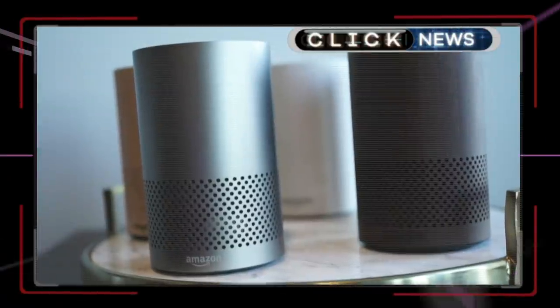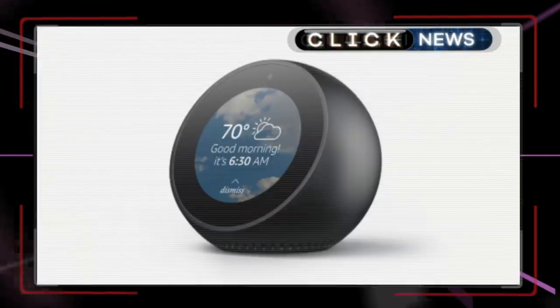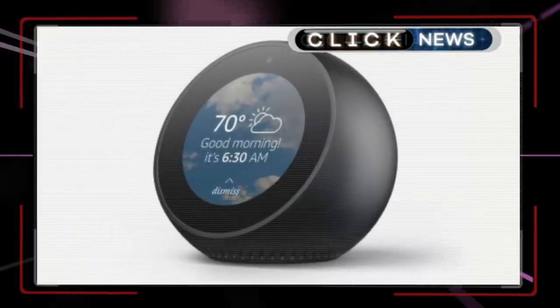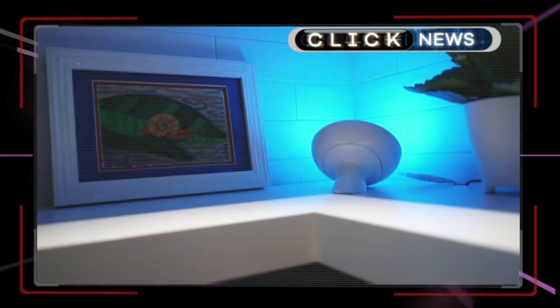Amazon announced a host of new hardware this week, including new versions of its digital assistant, the Echo. The Echo Spot features a screen and can make video calls and act as a nursery camera. And the Echo Plus can act as a smart home hub, connecting to and controlling other devices.